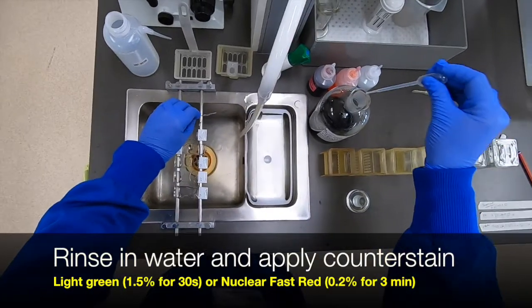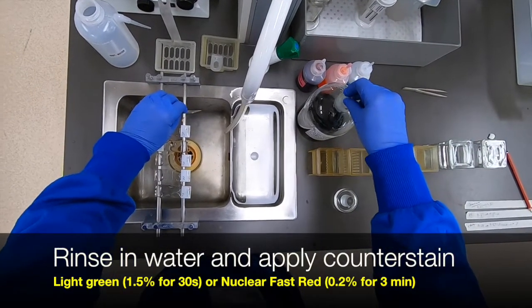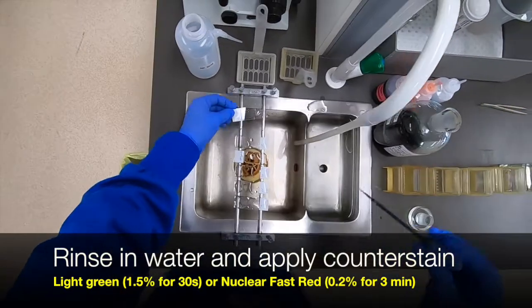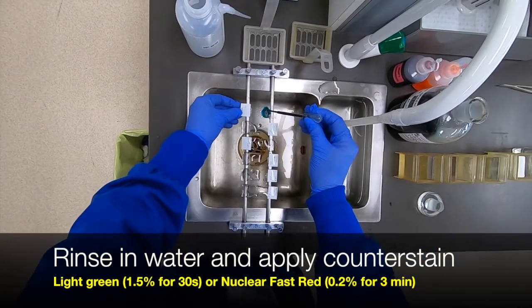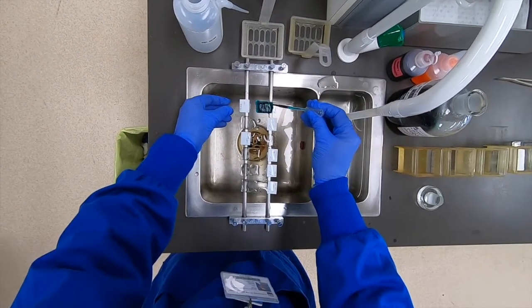You then simply apply your counter stain of choice, which can either be nuclear fast red, as used for the Gordon and Sweets, or as demonstrated here, brief treatment with light green.